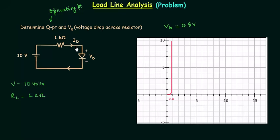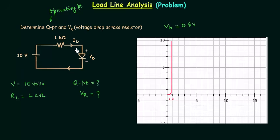Id is the current through the diode and Vd is the voltage across the diode. We have to find the Q point and Vr, the voltage across the resistor. We can easily calculate Vr once we have Id, so we will first find the Q point and then find Vr.